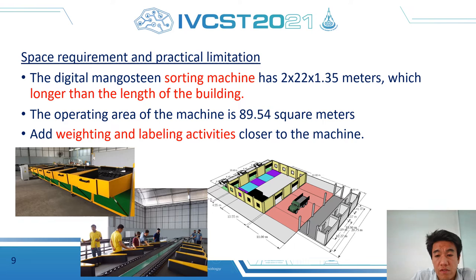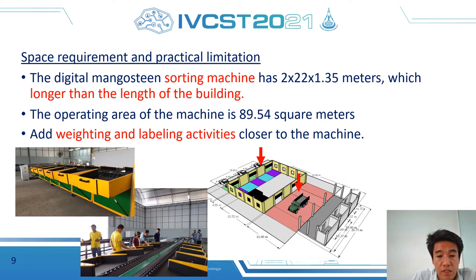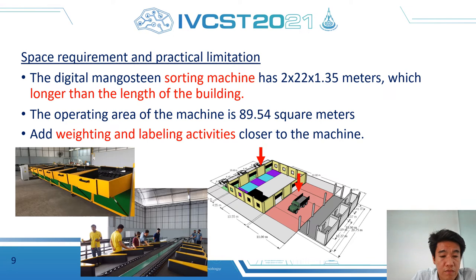We then draw an activity relationship diagram using the number of lines to represent the degree of closeness. An 'A' rating is represented by four red lines, indicating activities that must be close to each other. We next analyze space requirements and practical limitations. The first consideration is that the sorting machine is 22 meters long, which is longer than the length and width of the building, so the machine will extend outside the building on the front or back side.